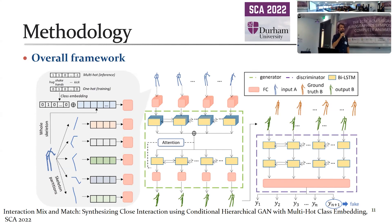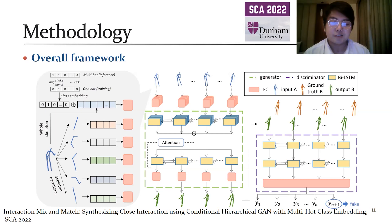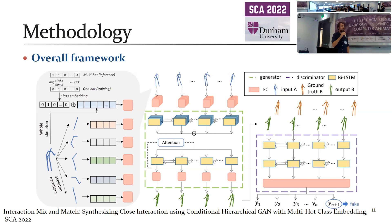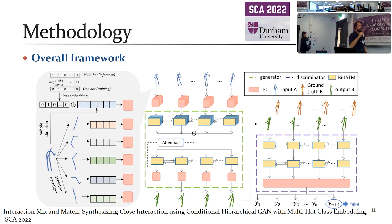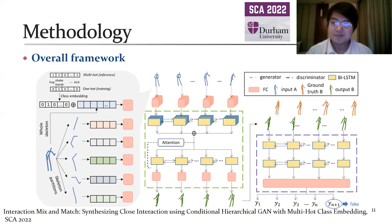A question was raised about whether the training set included any multi-class interactions where a character was doing multiple things simultaneously. The answer is no — all training data comprises only one action or interaction per sequence. It was suggested that comparing against a ground truth capturing multiple simultaneous reactions would be an interesting future direction.